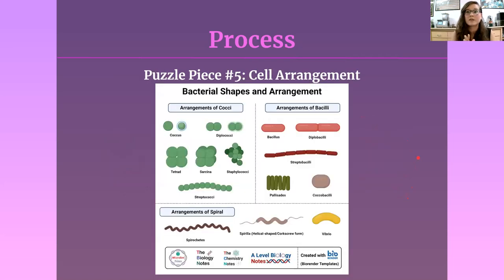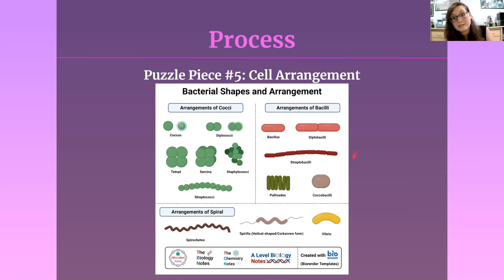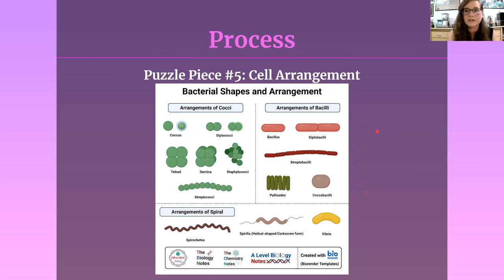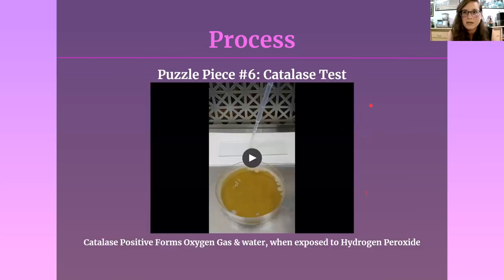Puzzle piece number five is cell arrangement — those tetrads I was talking about with Pediococcus and Megasphaera, or the chains you can sometimes see. This is just different terminology for the way they cluster. Staphylococci refers to random clusters; streptococci refers to strings; we also have chains of Lactobacillus. Just make note of all of these things to help figure out the bigger picture of what this bacteria is.